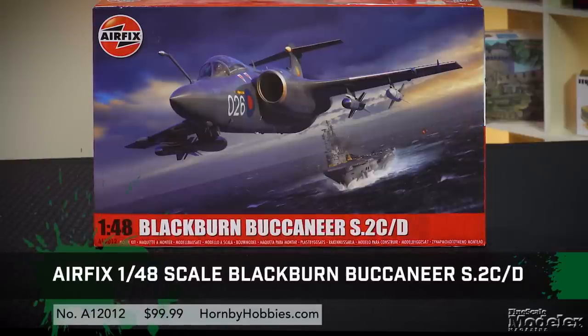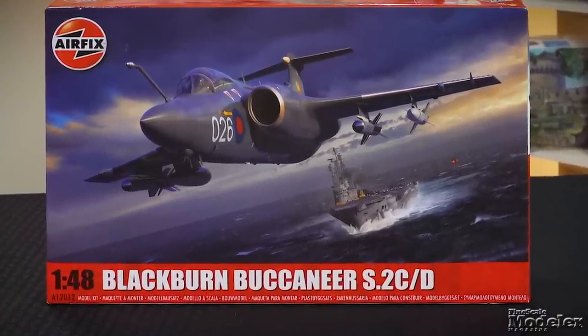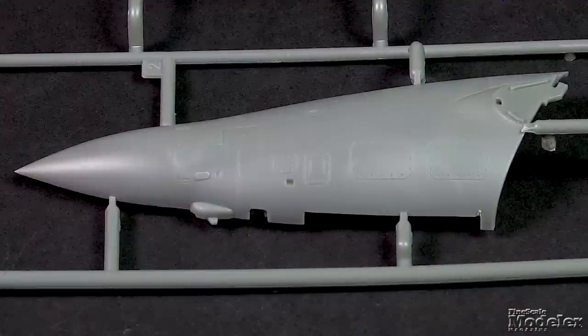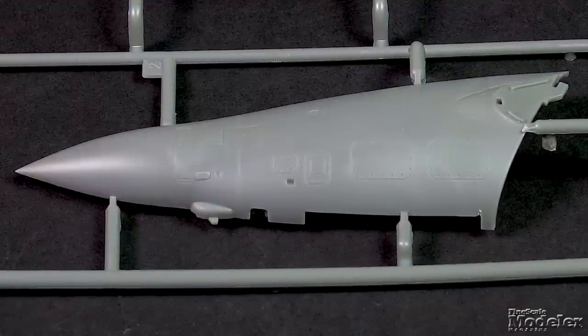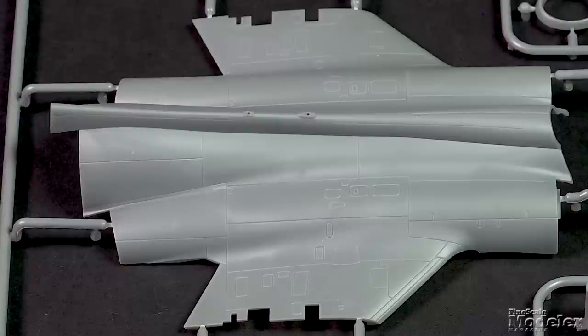These are the final variants of the aircraft in Royal Navy service. As I said when we looked at the 1:72 scale kit, the shape of the Buccaneer makes for an interesting part breakdown, with the forward fuselage and tail split vertically, and the center section split horizontally, incorporating the wings out to the wing fold.